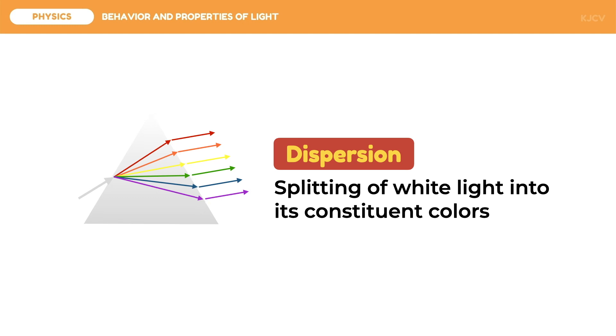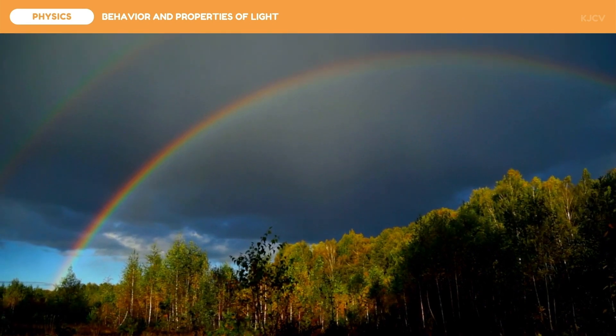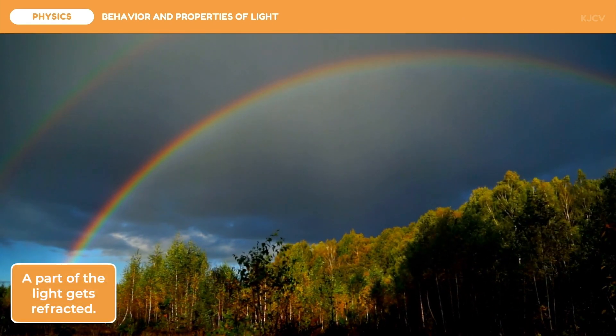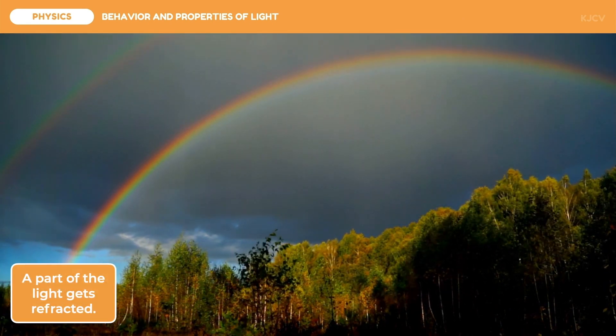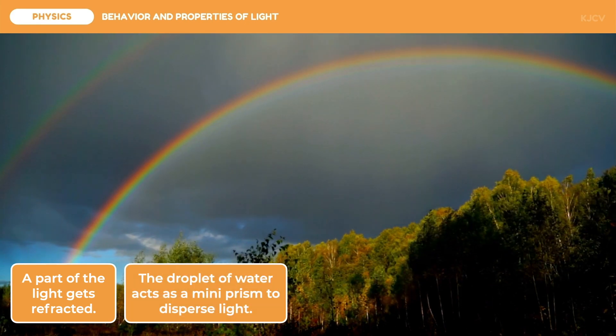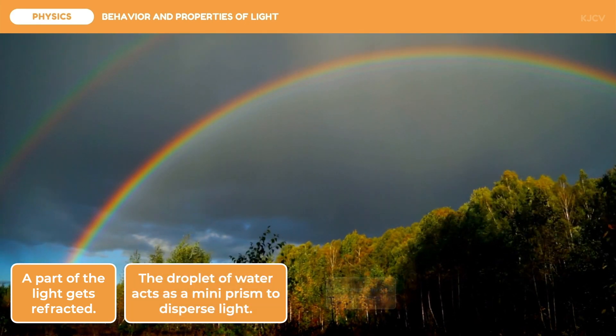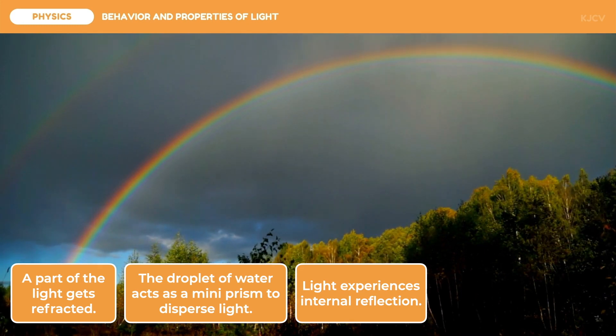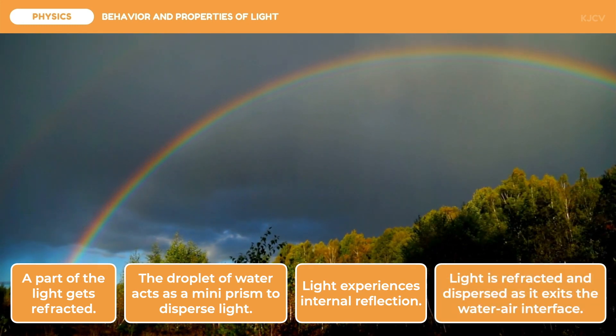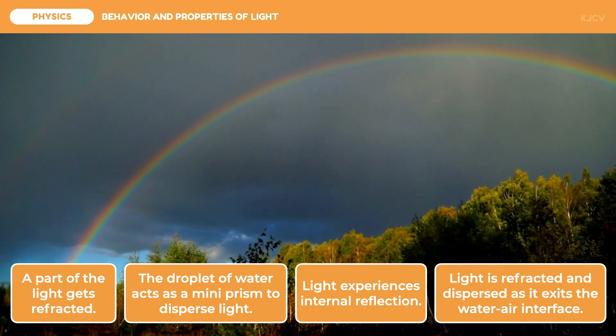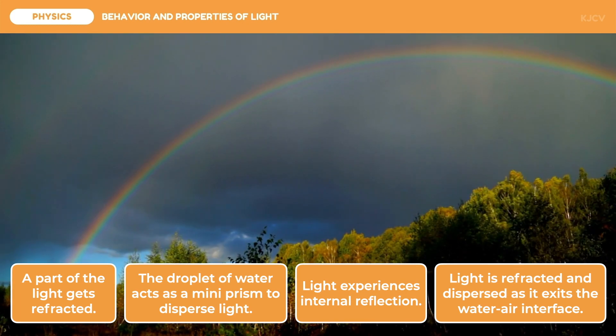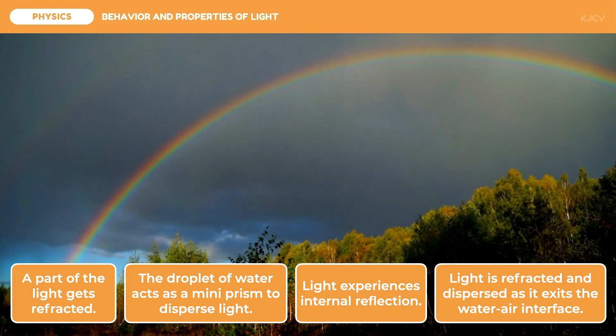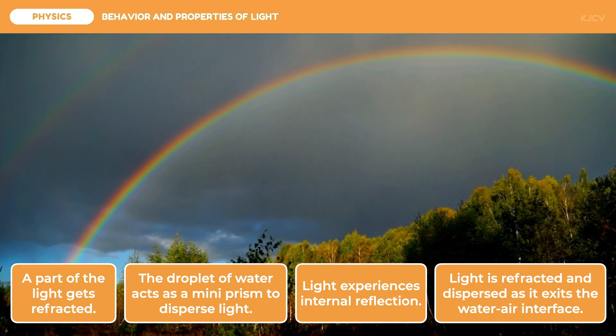Upon entering a water droplet at a certain point, part of the light gets refracted. The droplet serves as a prism which disperses light. Light is internally reflected once it reaches the back surface of the droplet. It will then exit the water-air interface in which it gets refracted and dispersed. We usually say that we see rainbows after the rain, in which the sky is already bright blue. But have you ever wondered why the sky is blue?